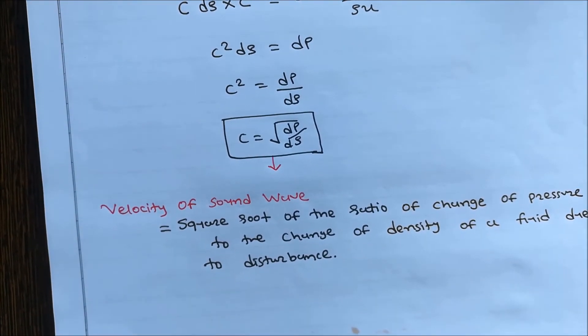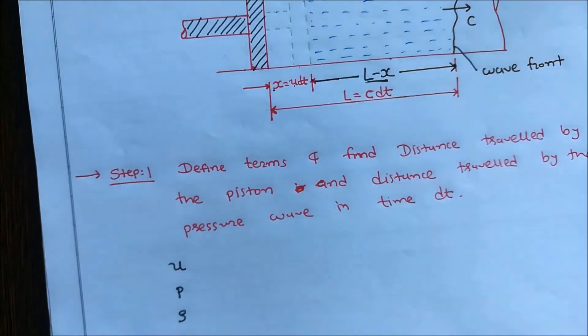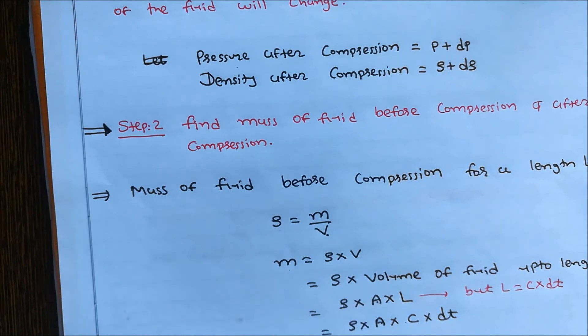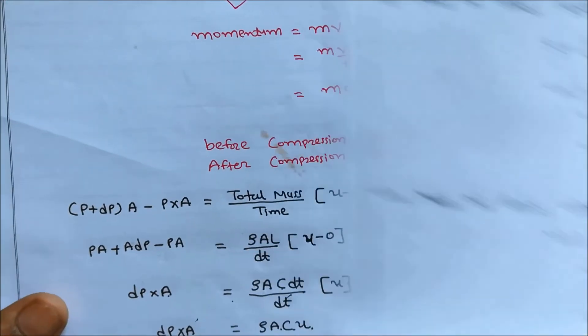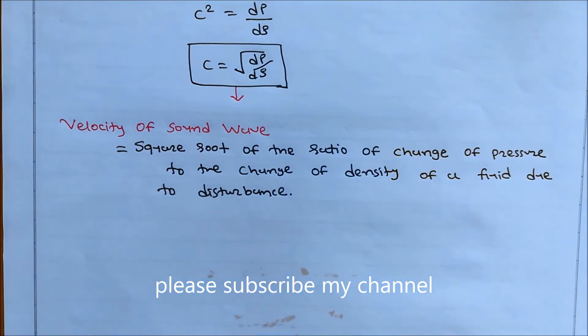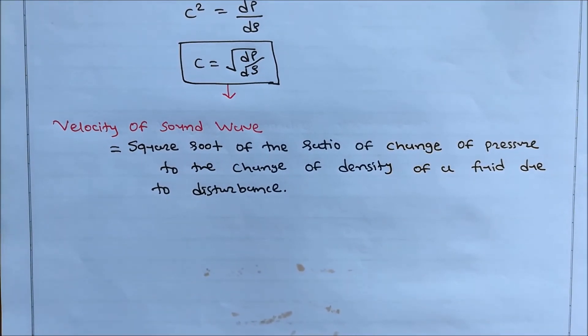This equation is easy to remember step by step. In step 1, define terms and find distances travelled by the piston and the pressure wave in time dt. In step 2, find the mass of fluid before and after compression. In step 3, apply the continuity equation. In step 4, apply the impulse-momentum equation. Then you derive C equals the square root of dP divided by d-rho.